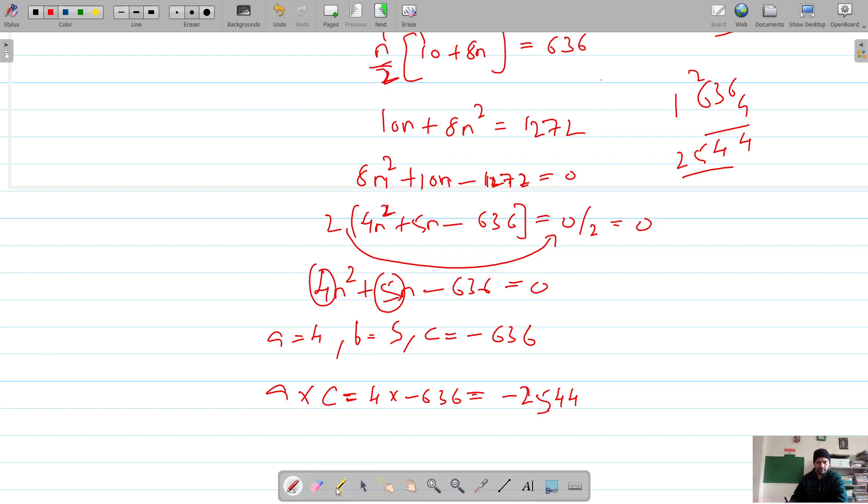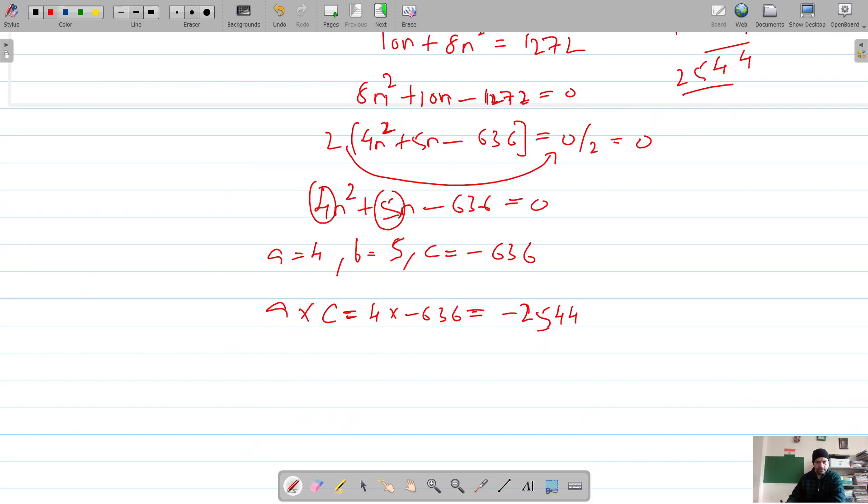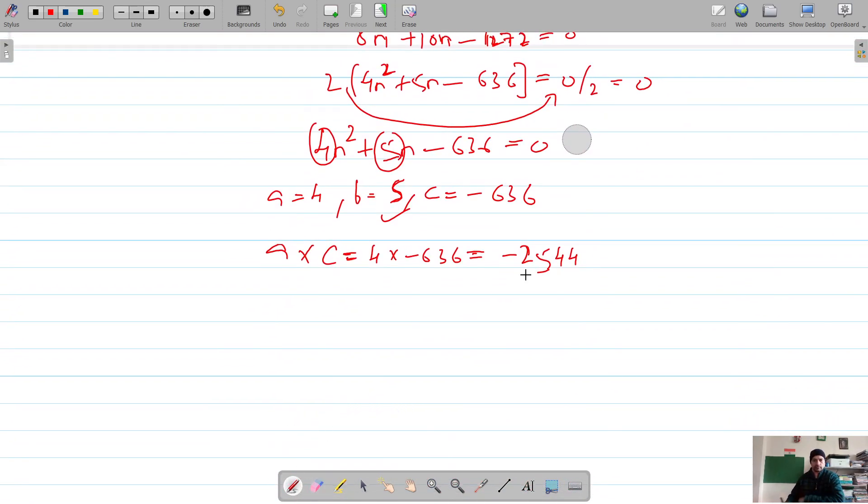So we have to find the factors of 2544 for which their sum or difference is 5. So let's try to factorize it and see if we can get those factors or not.